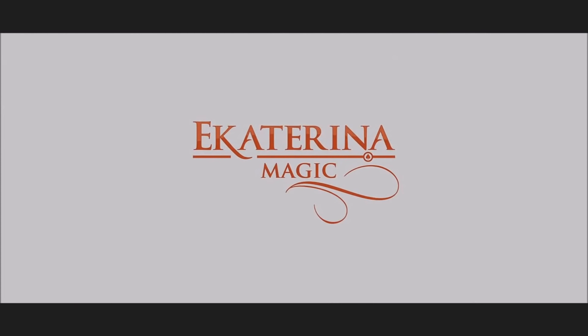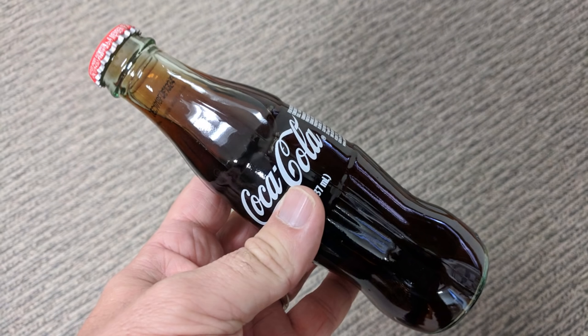All right, so a couple questions we always ask about all of our magic reviews, and the first of which is what's in the box. You're getting a tube-shaped mailing cardboard tube. Inside that, you get a bunch of bubble wrap because she is mailing you a real mini Coke bottle.